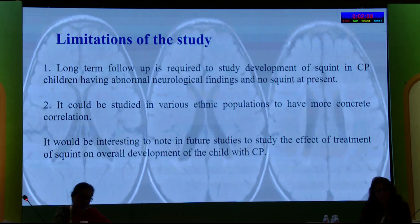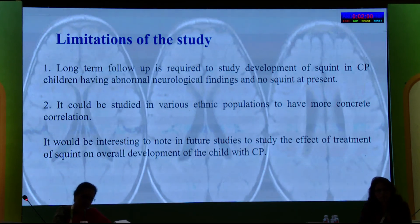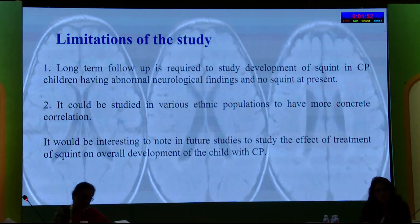Limitations of the study include that long-term follow-up is required to study the development of squint in CP children who have abnormal neurological findings but no squint at present. The study could also be extended to various ethnic populations to obtain more concrete correlation. It would be very interesting in future studies to examine how the effect of treatment impacts gross and fine motor functions in the development of the child with CP.